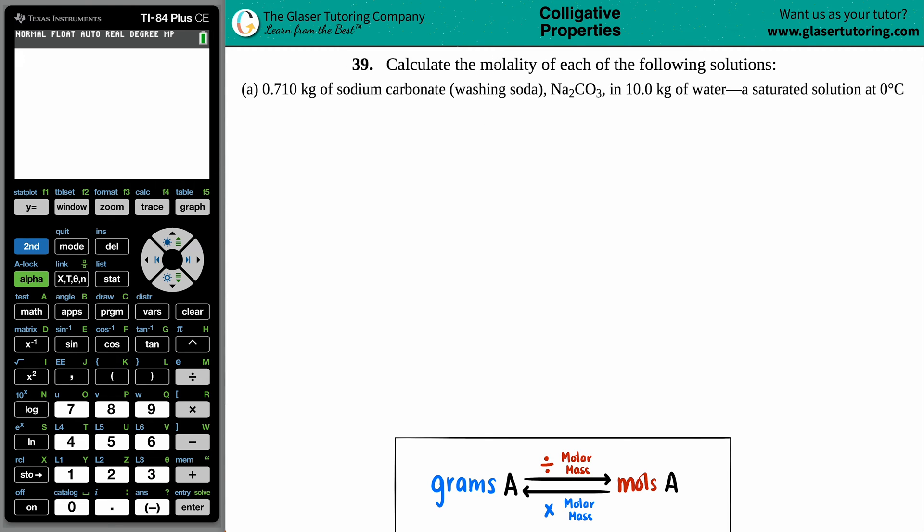Number 39. Calculate the molality of each of the following solutions, and then we have letter A. So we have 0.710 kilograms of sodium carbonate, which is washing soda, Na2CO3.